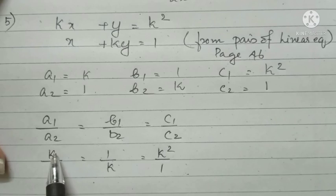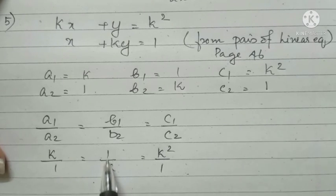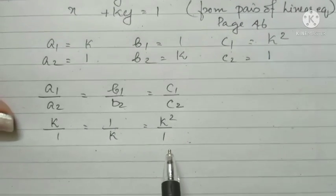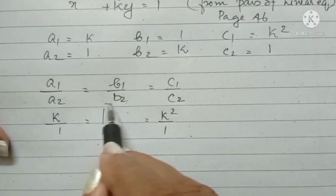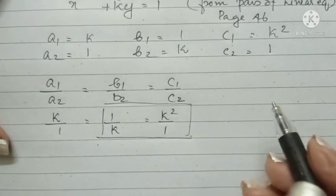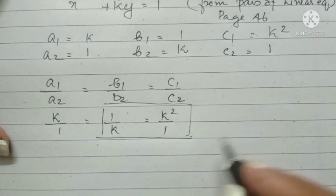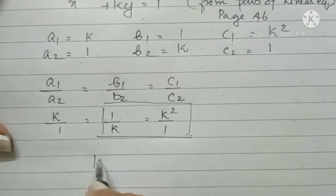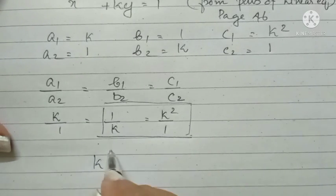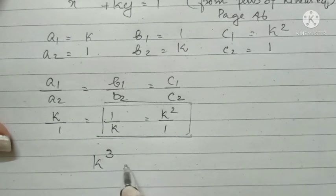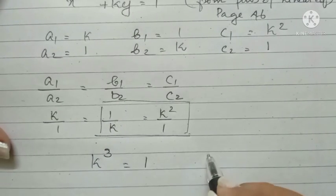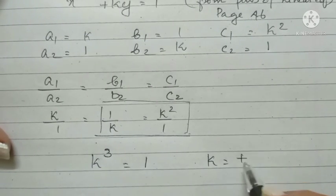Therefore, K by 1 equal to 1 by K equal to K squared by 1. We have to find the value of K. Therefore, we are taking these two equations. Cross multiplying. Then, K cubed equal to K squared into K is K cubed, 1 into 1 is 1. Then, what is K? K equal to positive 1.